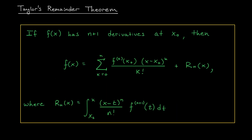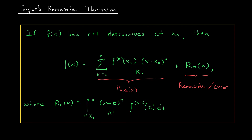We're now ready to state the main result of this lesson: Taylor's remainder theorem. It says that if your function f of x has n plus 1 derivatives at x0, then f can be written as the nth order Taylor approximation plus a remainder term. That error can be written as the integral from x0 to x of x minus t to the n divided by n factorial times the n plus first derivative of f at t. Unfortunately, we can't actually evaluate this integral. But as you'll see in the next lesson, we'll use this integral to obtain an upper bound on the error term — known as Taylor's inequality — which will tell us how close this polynomial approximation is to the values of our function.